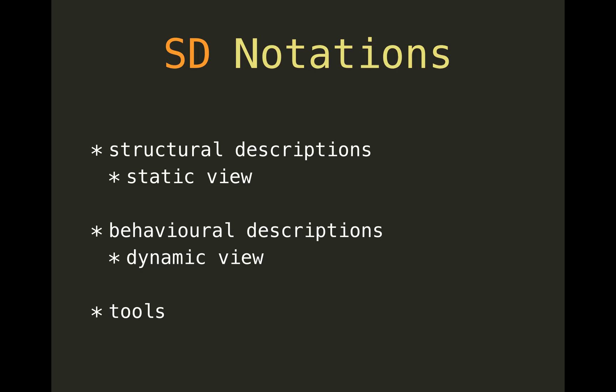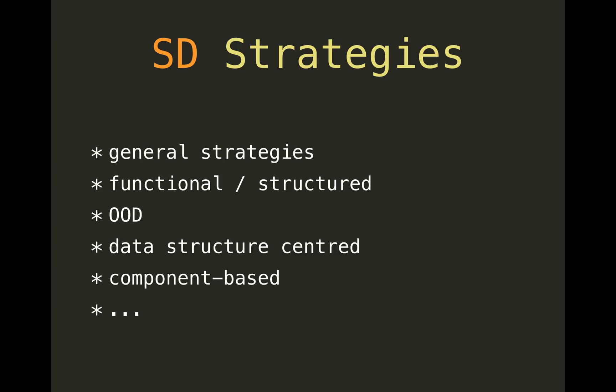Notations. There are basically two families of descriptions. One is based on a static view — things like entity-relationship diagrams or architecture description languages; these are called structural descriptions. The other family is behavioral descriptions, which are about dynamic views — data flow diagrams, flow charts, sequence diagrams, and so on. And of course there are many tools to support this.